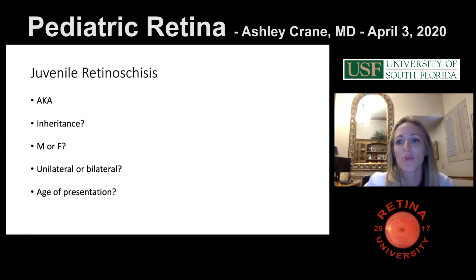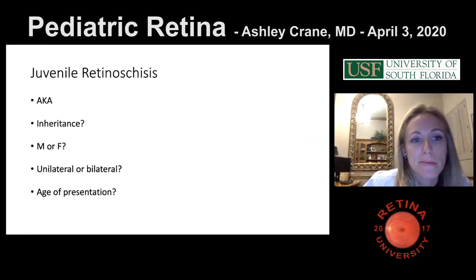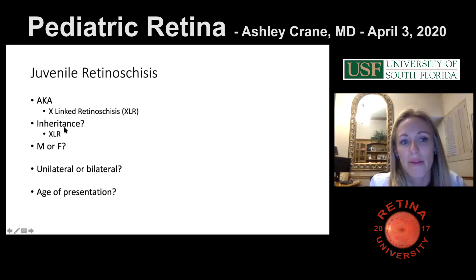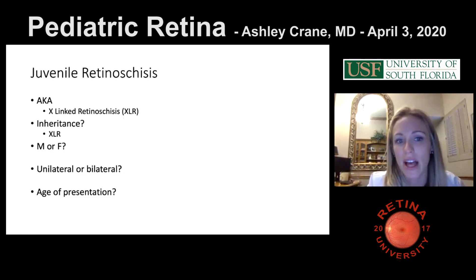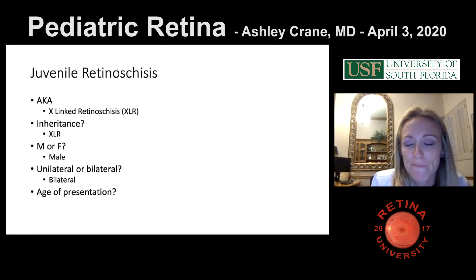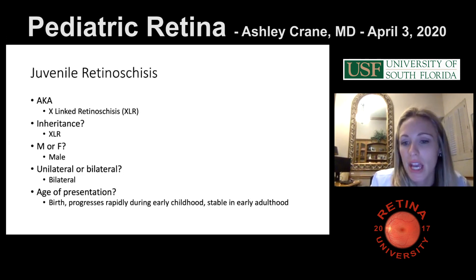Juvenile retinoschisis is also called X-linked retinoschisis. The inheritance is X-linked recessive — both the abbreviation XLR and the inheritance are XLR, making it easier to remember. It's a male disorder, bilateral. It is seen from birth and progresses rapidly during early childhood, but often stabilizes during early adulthood and some cysts can even collapse.